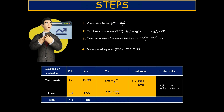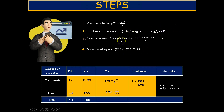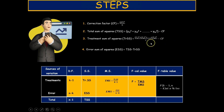The algebraic steps for hypothesis testing in CRD are as follows. First, calculate the Correction Factor (CF) as the square of the grand total divided by the total number of observations (treatments × replicates). Second, calculate the Total Sum of Squares by squaring each observation, summing them, and subtracting the CF. Third, calculate the Treatment Sum of Squares by squaring each treatment total, dividing by the number of replicates, summing, and subtracting the CF. Finally, the Error Sum of Squares is simply the Total SS minus the Treatment SS.